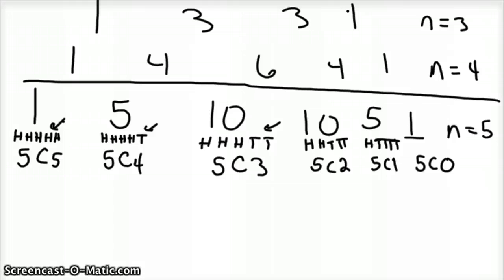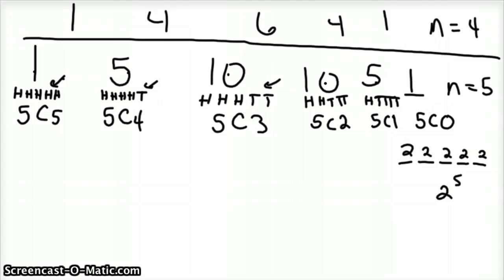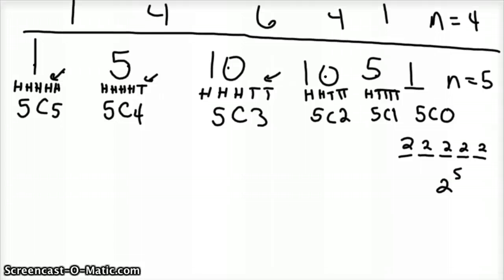With five coin tosses you have two choices for each toss, so two to the fifth power, which is 32 different ways. And if you add one, five, ten, ten, five, one, you get 32. So there are 32 ways of getting all these combinations.